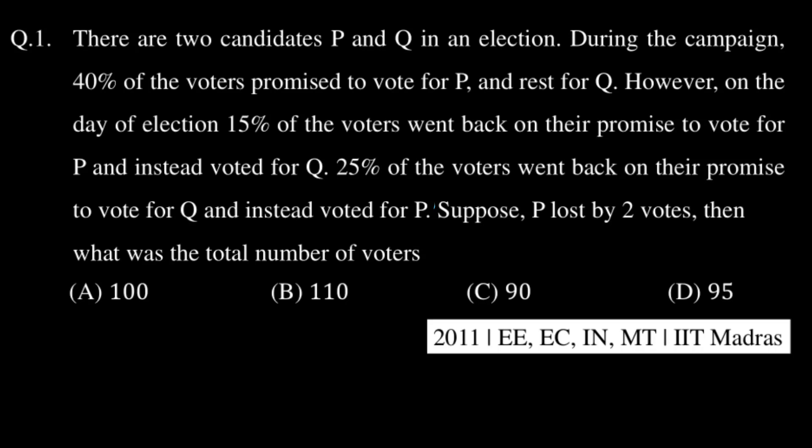Basically, we have two people P and Q. 40% of the voters promised to vote for P and the rest for Q — that means 60%. Now, 15% of the voters who promised to vote P went back on their promise. Note that this means 15% of the people who promised to vote P, not 15% of the total voters.